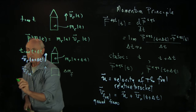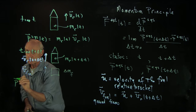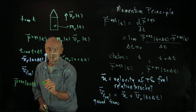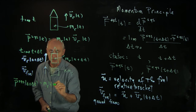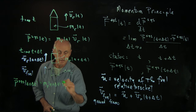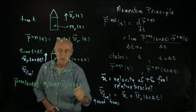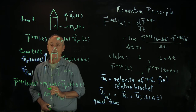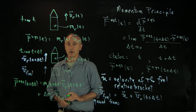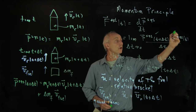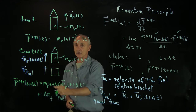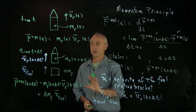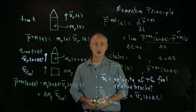Now we can write the momentum of the system at time t plus delta t. This has two terms: the mass of the rocket at time t plus delta t times the velocity of the rocket, plus the mass of the fuel times the velocity of the fuel with respect to the ground. We now have the momentum at both states. We'll use the mass conservation equation and the relative velocity condition to simplify this expression next.